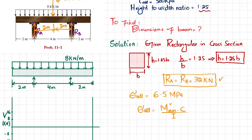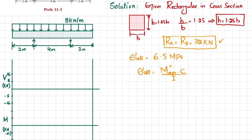I have already sketched the beam. At x equals zero, the shear force is zero because the distributed load is 8 kilonewton per meter. At x equals 2 meters, 8 times 2 equals 16 kilonewton. Taking each division as 8, at a distance of 2 meters the shear force reaches 16 kilonewton.